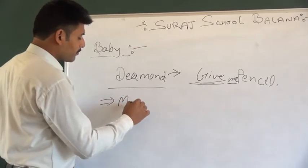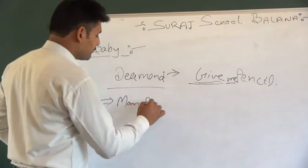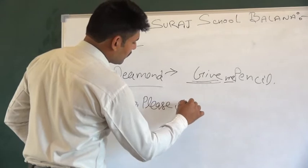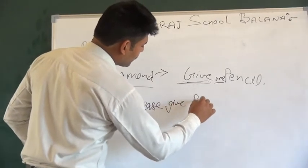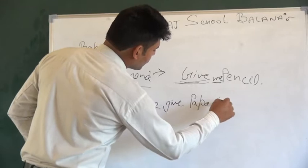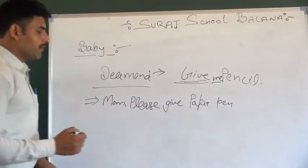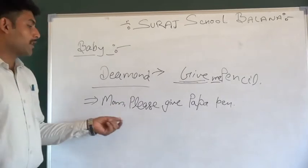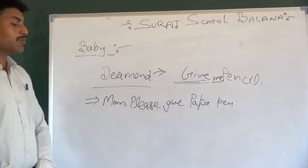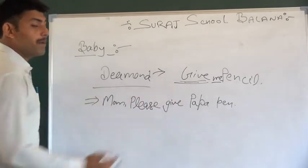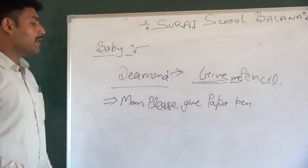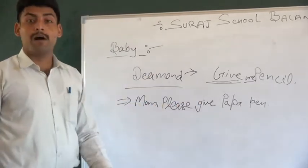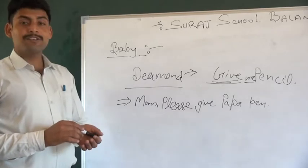For example: Mom, please give Papa pen. Because we want to demand for Papa, we want to demand for Mama. So that will be spoken in this way: Mom, please give Papa pen. If we want to use pencil, we will say Mom, please give Papa pencil. Okay, so that is demand for others.